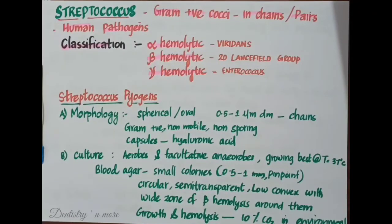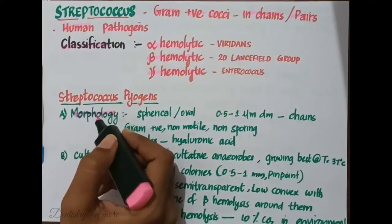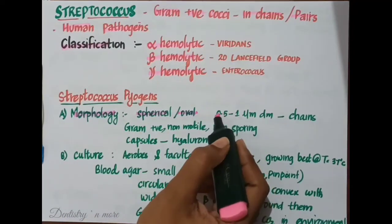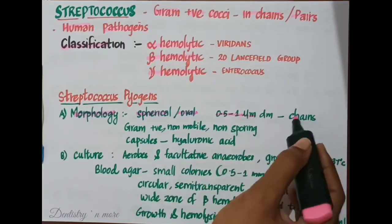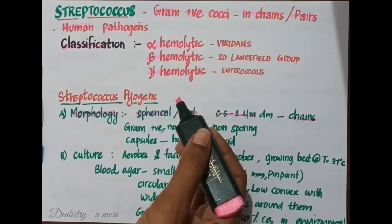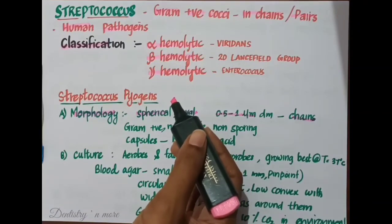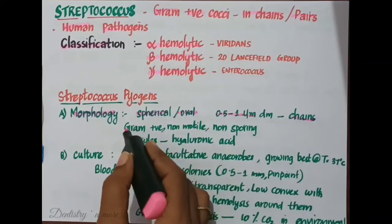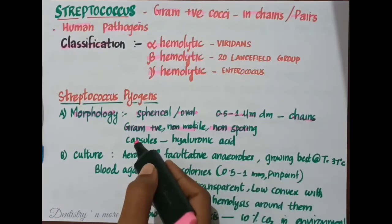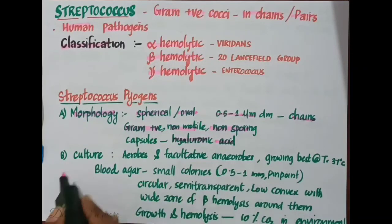Streptococcus pyogenes are usually spherical or oval in shape with a diameter of 0.5 to 1 micrometer. They are arranged in chains because of successive cell division occurring in one plane, where daughter cells fail to separate completely. They are gram-positive, non-motile, and non-sporing bacteria. Some strains have capsules composed of hyaluronic acid.